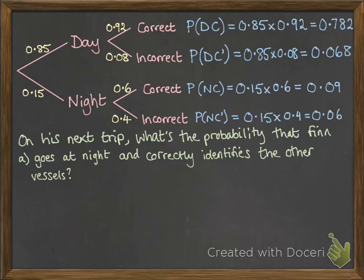Okay, so on a question, you might get something like this. So on his next trip, what's the probability that Finn goes at night and correctly identifies the other vessels? Well, that's going to be this one. Night time and correctly identified. We've already worked that one out. We've done the calculation above, so we can just write it down here.